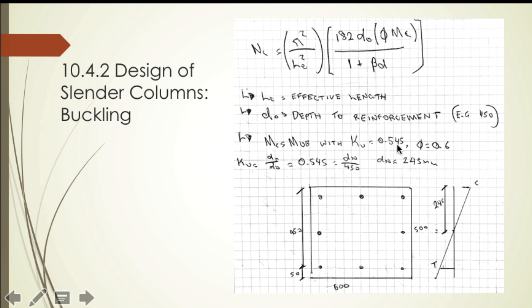The value of M_c is calculated at a value or point of k_u which is 0.545, with phi equals 0.6. Here's a quick example with a 500 by 600 column, and the depth of the neutral axis is 245. We have to find the moment capacity of the column with this value of k_u, and then we can finally get the buckling capacity.